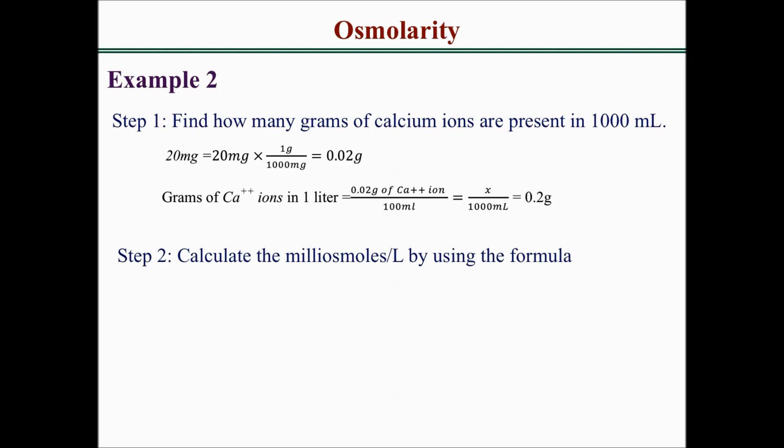Step 2 is to calculate the milliosmoles per liter. We have to use the formula. The formula for milliosmoles per liter is mass in grams over molecular weight, which is in grams per mole, times number of particles times 1000.